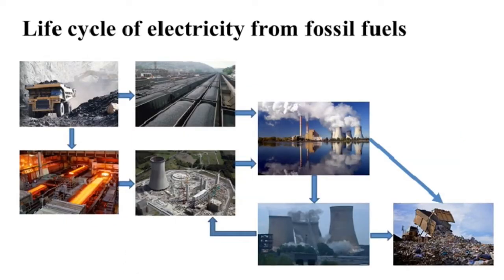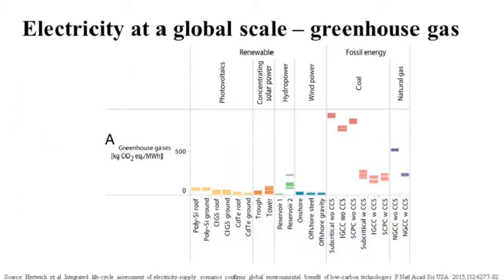If we look at the life cycle of electricity generated from fossil fuels such as coal, it's relatively straightforward. You need to mine the raw materials for your coal power plant, build the plant, mine and transport the fuel, and then operate the plant — burning coal to generate electricity. And of course, finally, the decommissioning of the power plant, with demolition waste being either recycled or disposed of. So we need to use LCA to evaluate all energy technologies to fully understand their impact, so we can choose the ones with the best environmental performance in order to move towards a sustainable energy system.